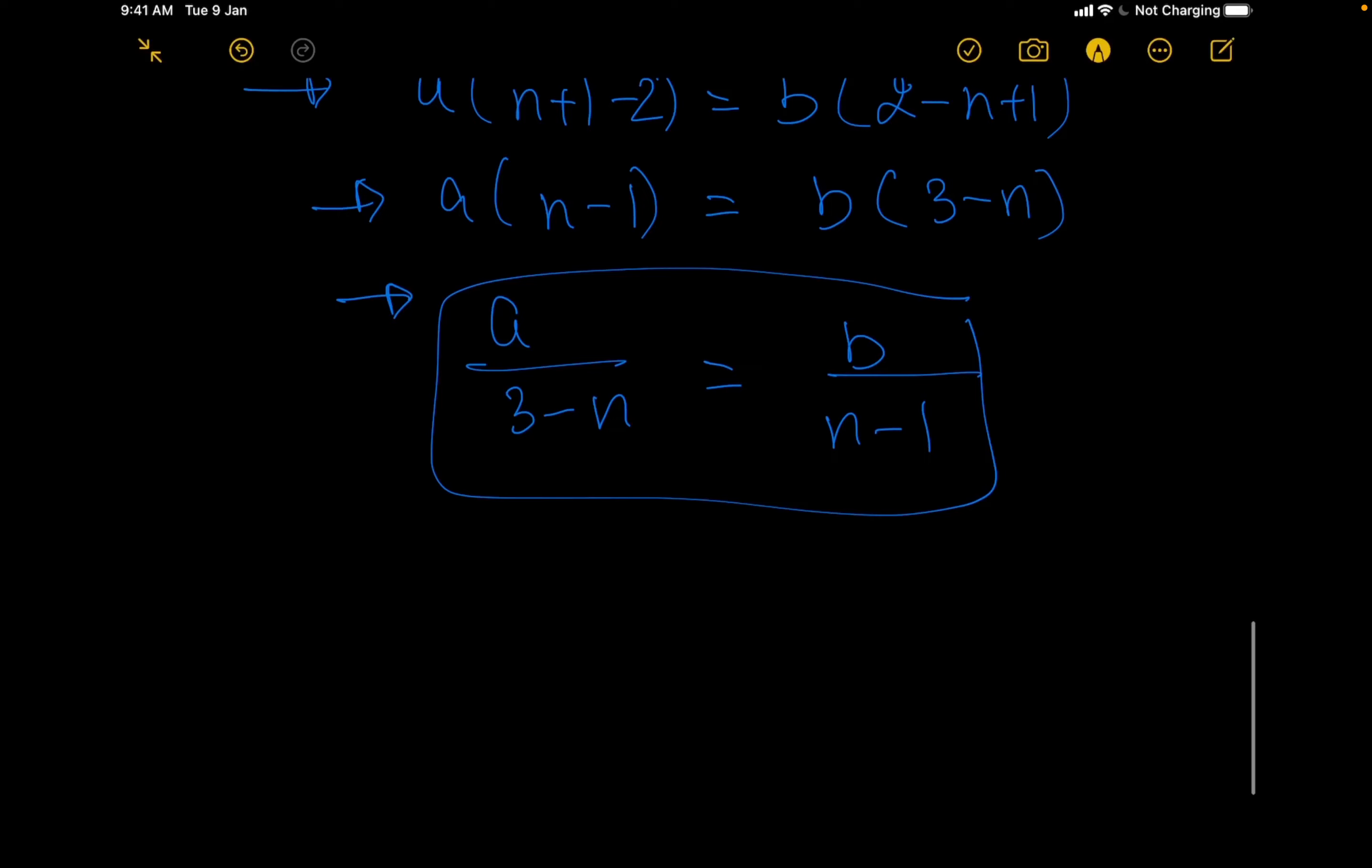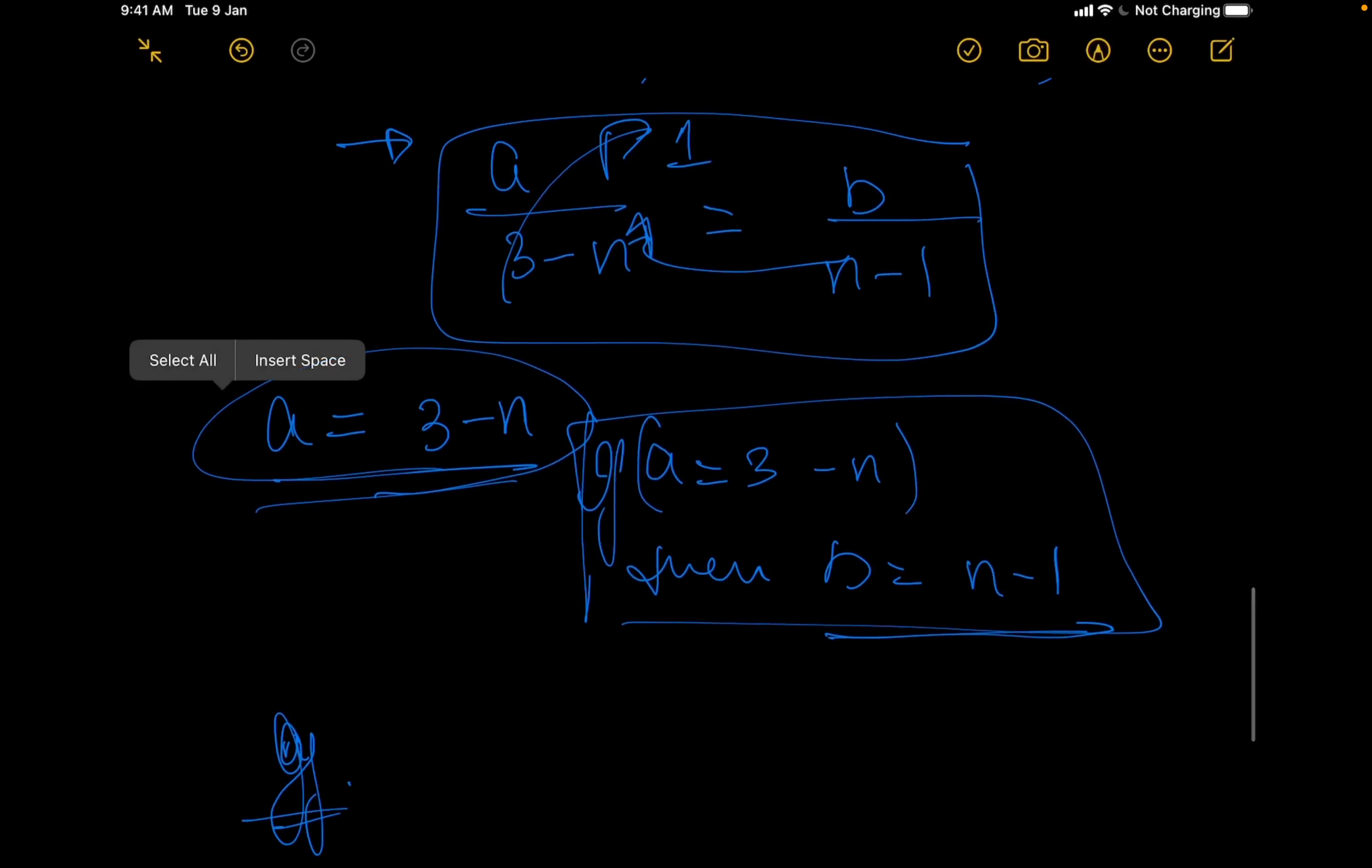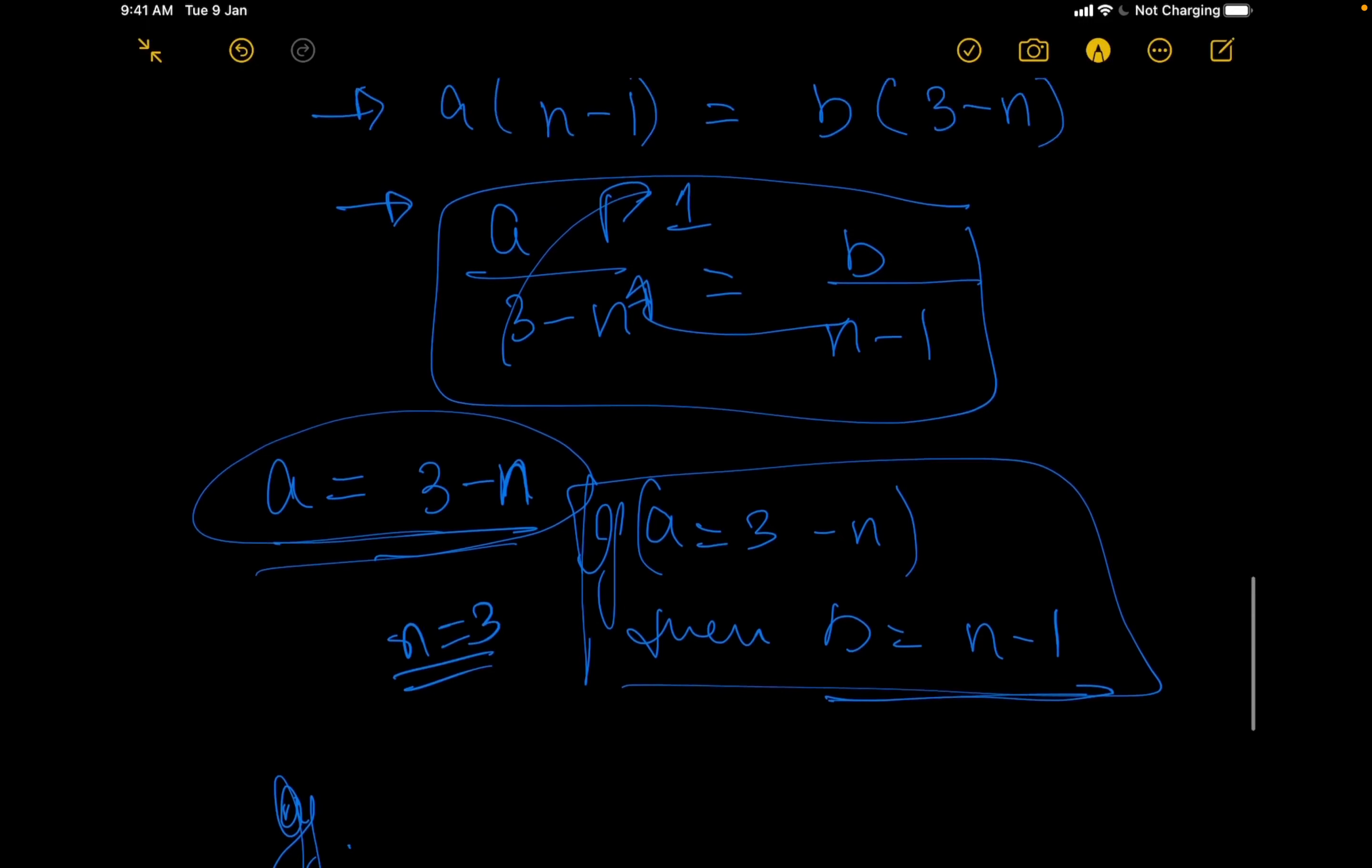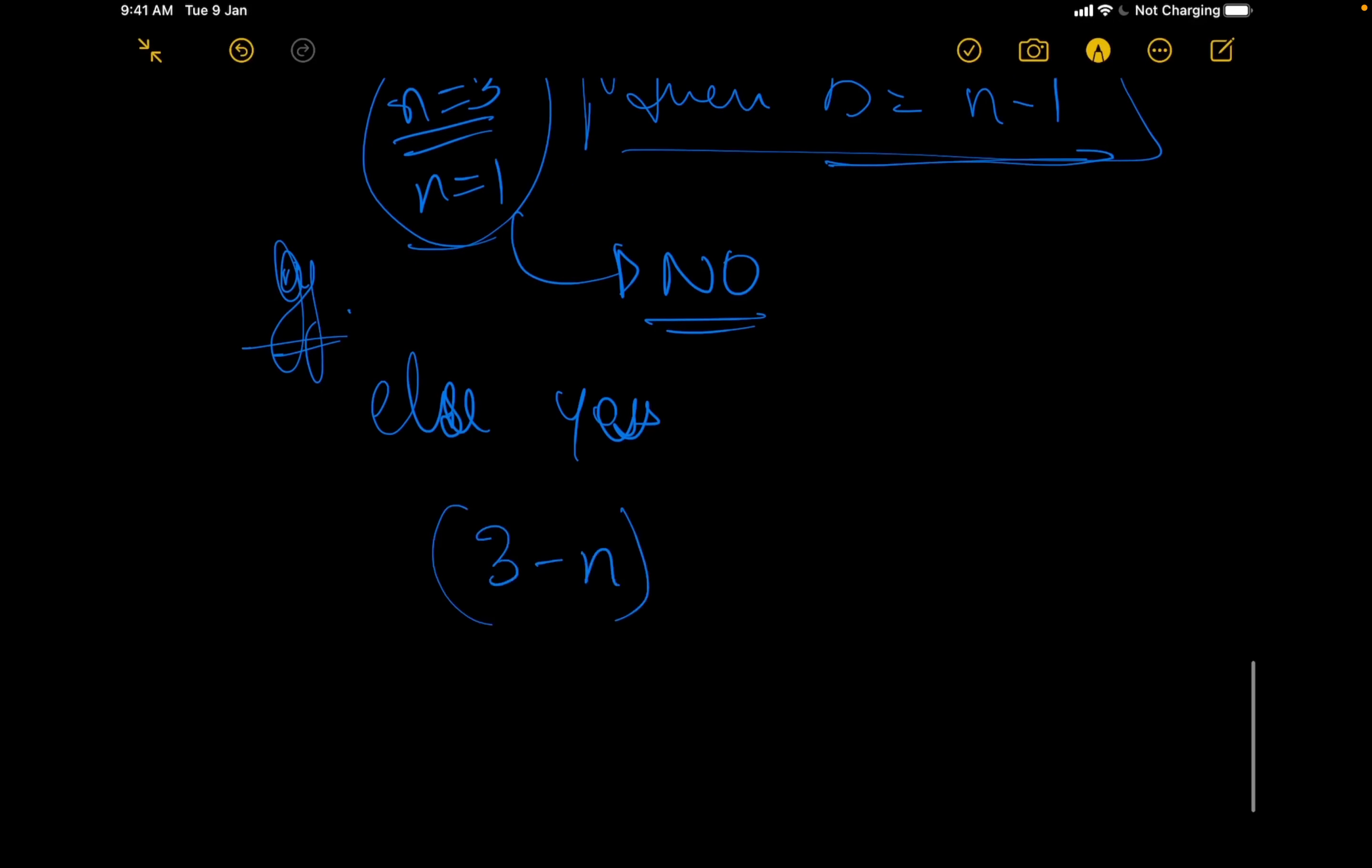Since we do not want fractions, what we can say is that for any n, let a be equal to 3-n. If a equals 3-n, then b equals n-1. So this is the simple answer. The answer would not exist for n equals 3 because as soon as n equals 3 or n equals 1, these terms would become 0 and the answers would be undefined because we are dividing by 0. That is not defined. So we do not have answers for n equals 3 and n equals 1. For these we can directly print no. Else, we can print yes followed by 3-n and n-1, that is the value of a and b as we derived.